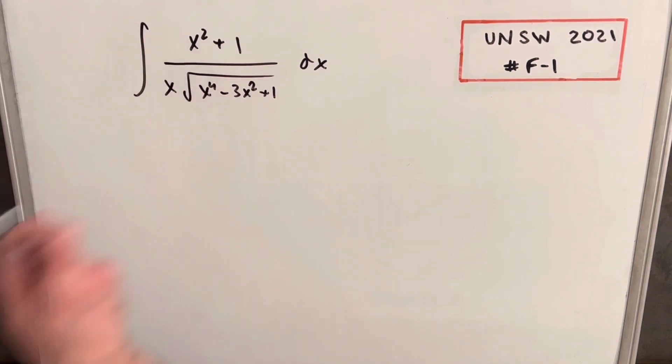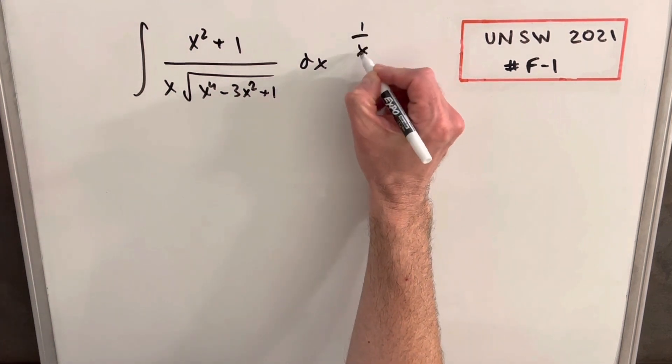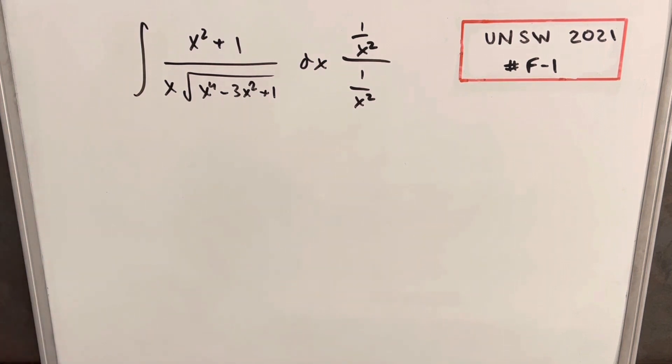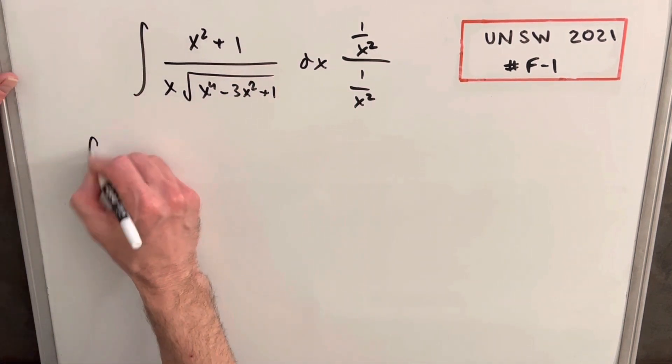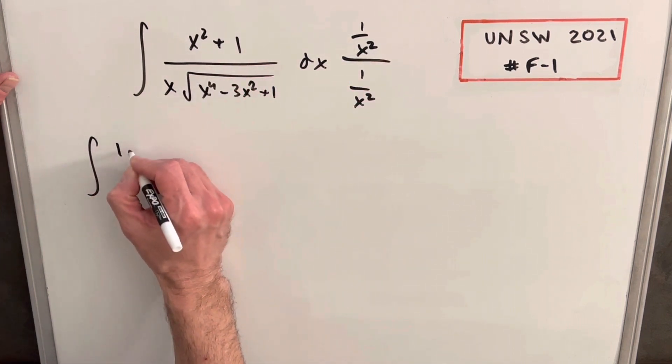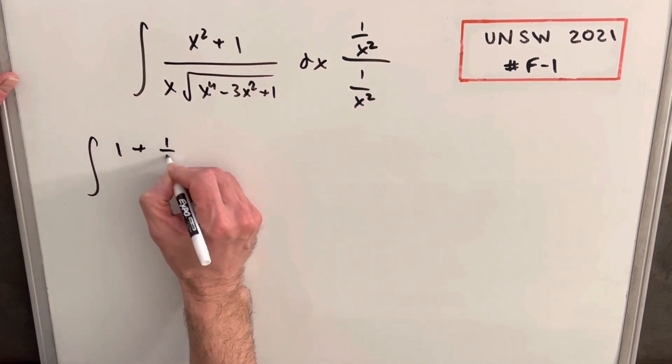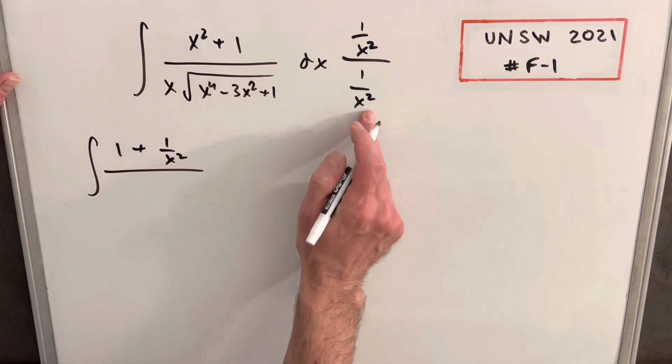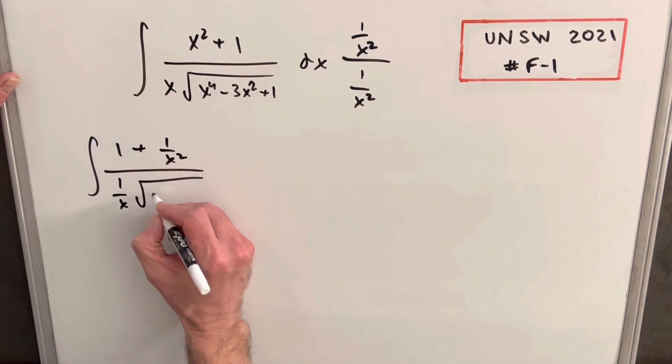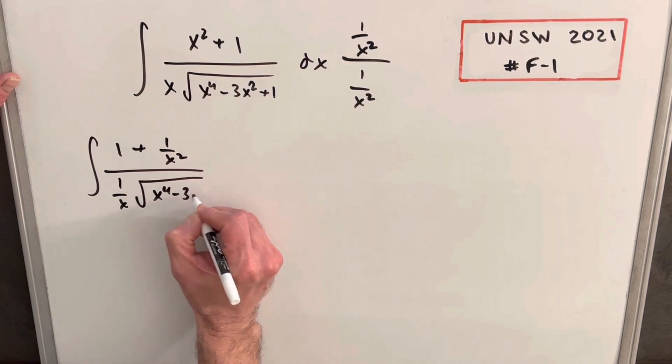Looking at this numerator, x squared plus 1, gave me the idea to do this trick where we multiply the numerator and denominator by 1 over x squared. Let's multiply this out and see how it goes. In the numerator, 1 over x squared times x squared is going to give us 1, and then we're going to have 1 over x squared here. I'm going to multiply 1 over x squared times x, and we're going to have just 1 over x. And the radical, for now, is going to stay the same.